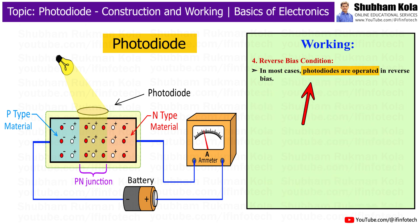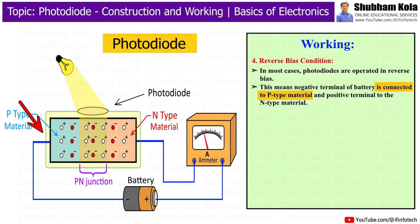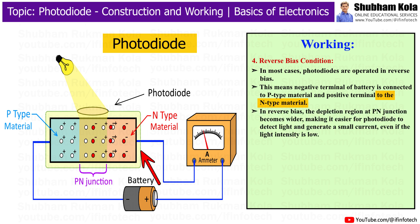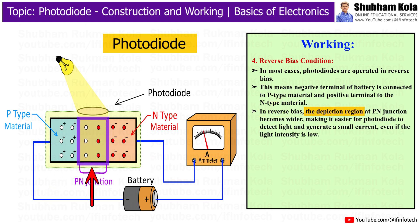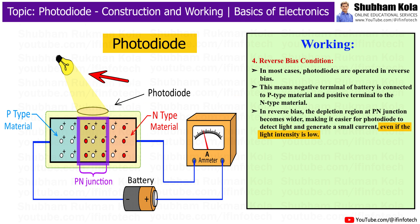In most cases, photodiodes are operated in reverse bias. This means the negative terminal of a battery is connected to the p-type material and the positive terminal to the n-type material. In reverse bias, the depletion region at the p-n junction becomes wider, making it easier for the photodiode to detect light and generate small current even if the light intensity is low.